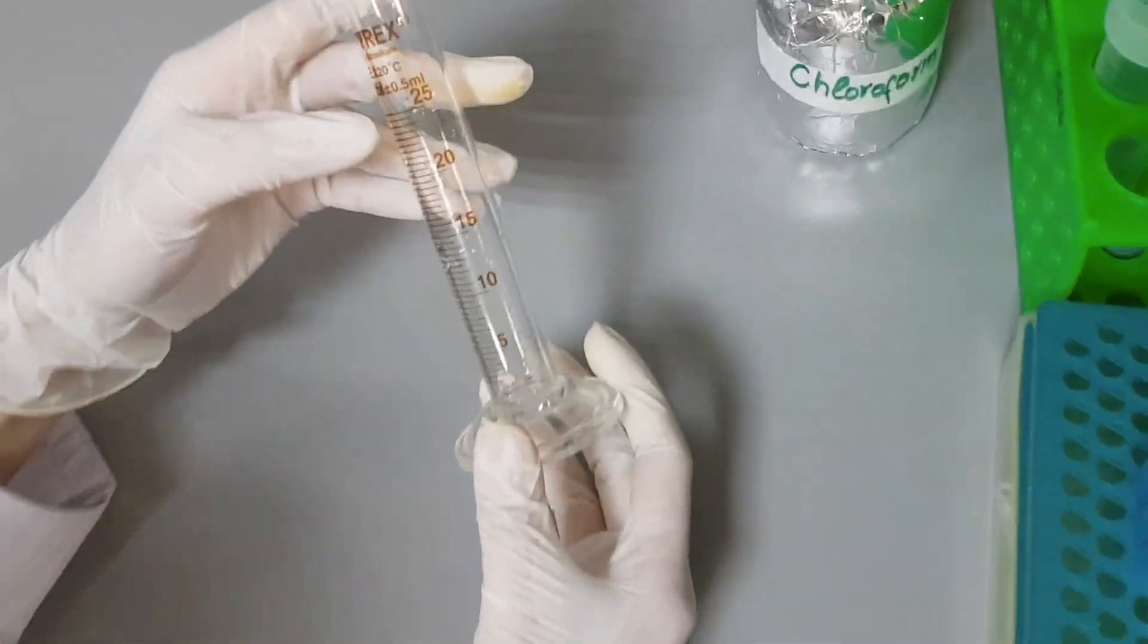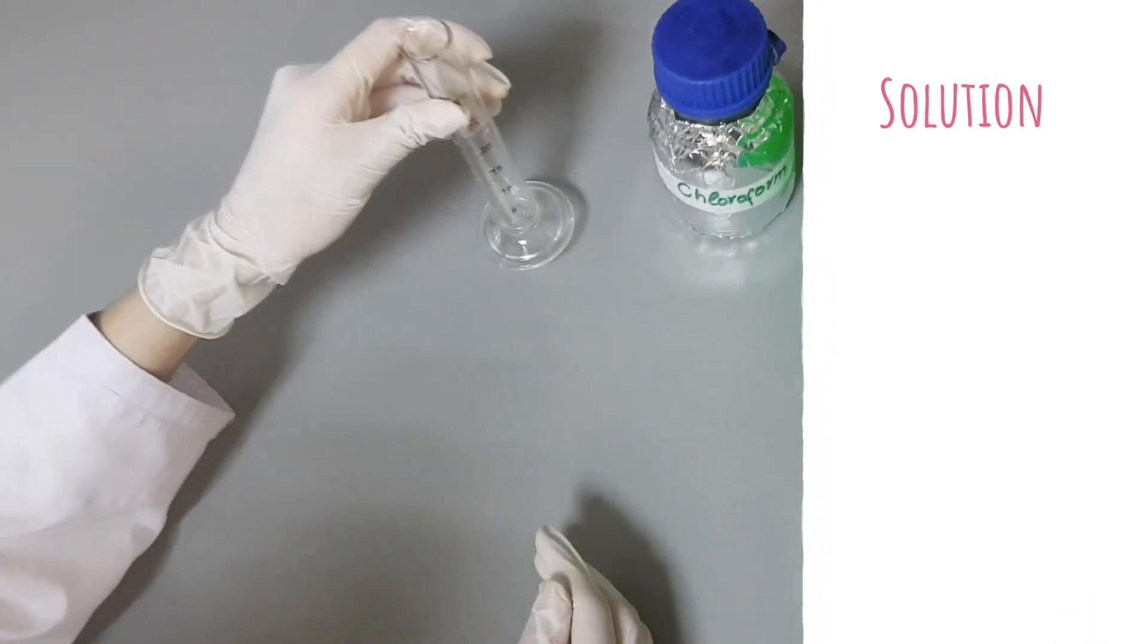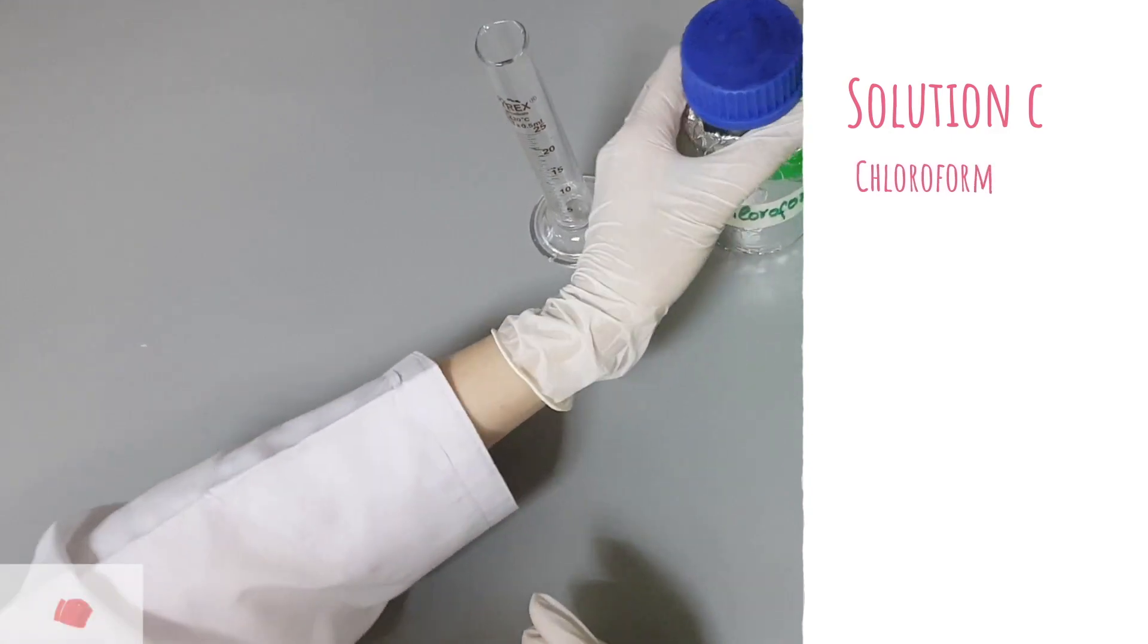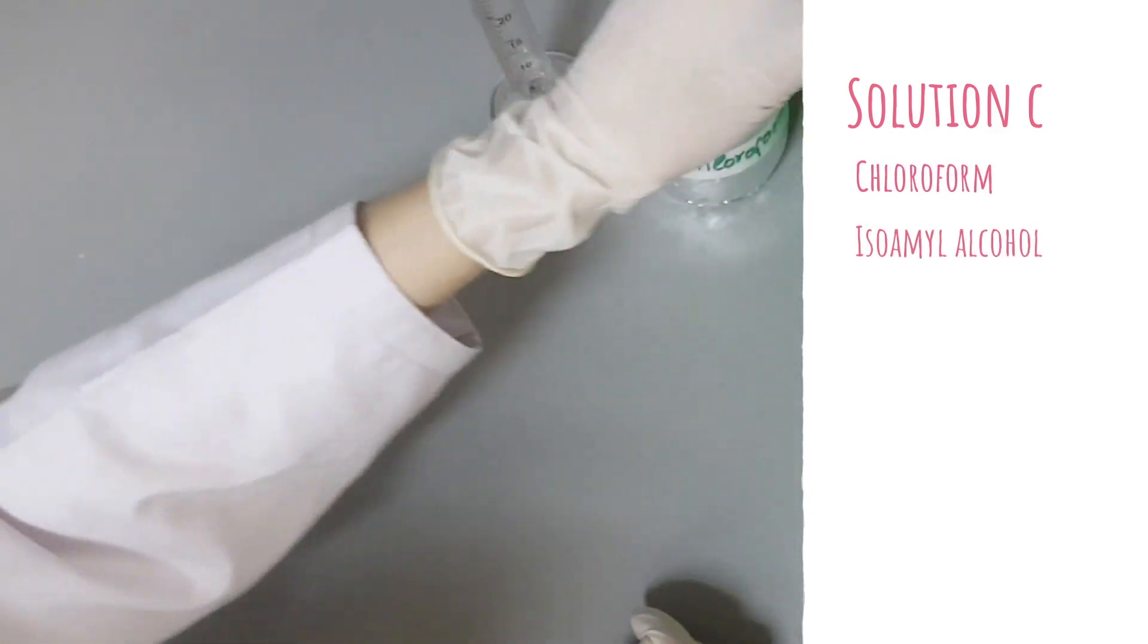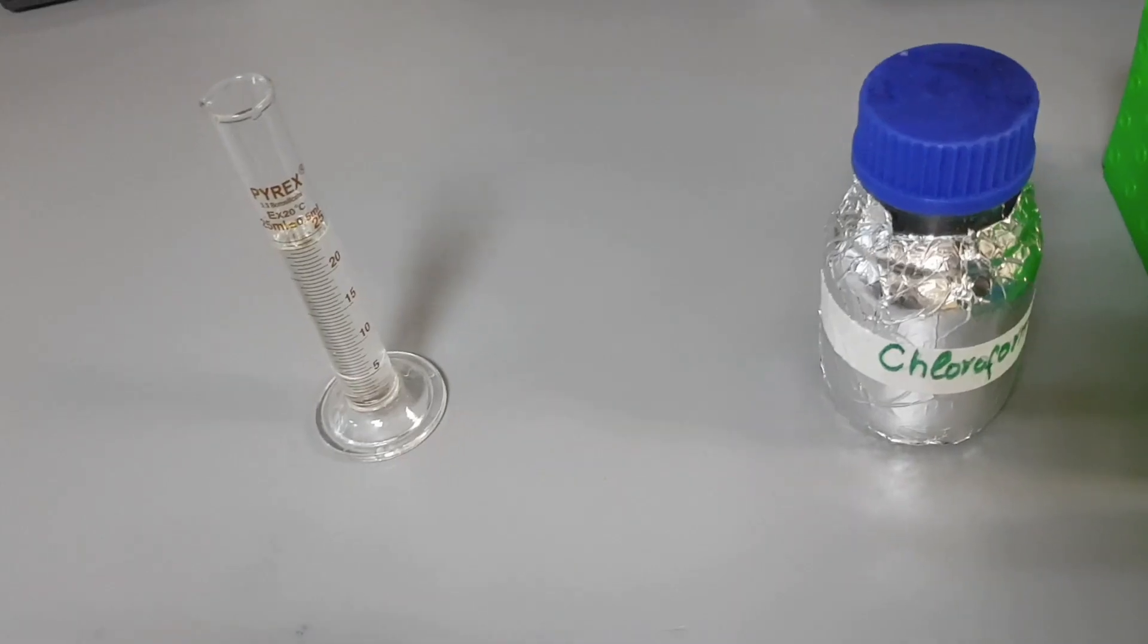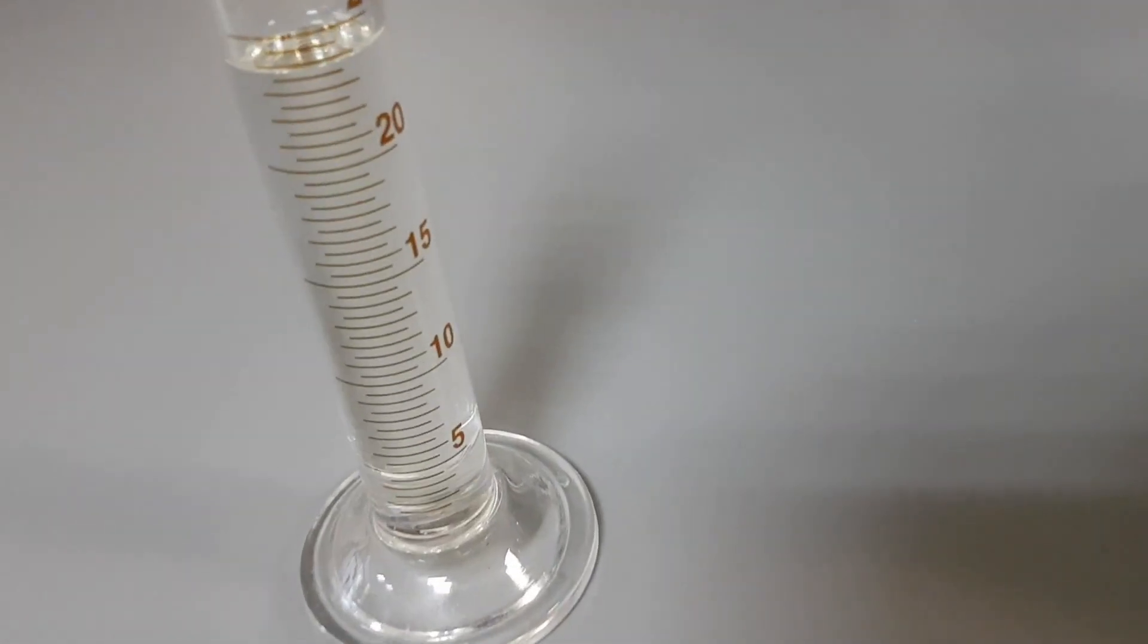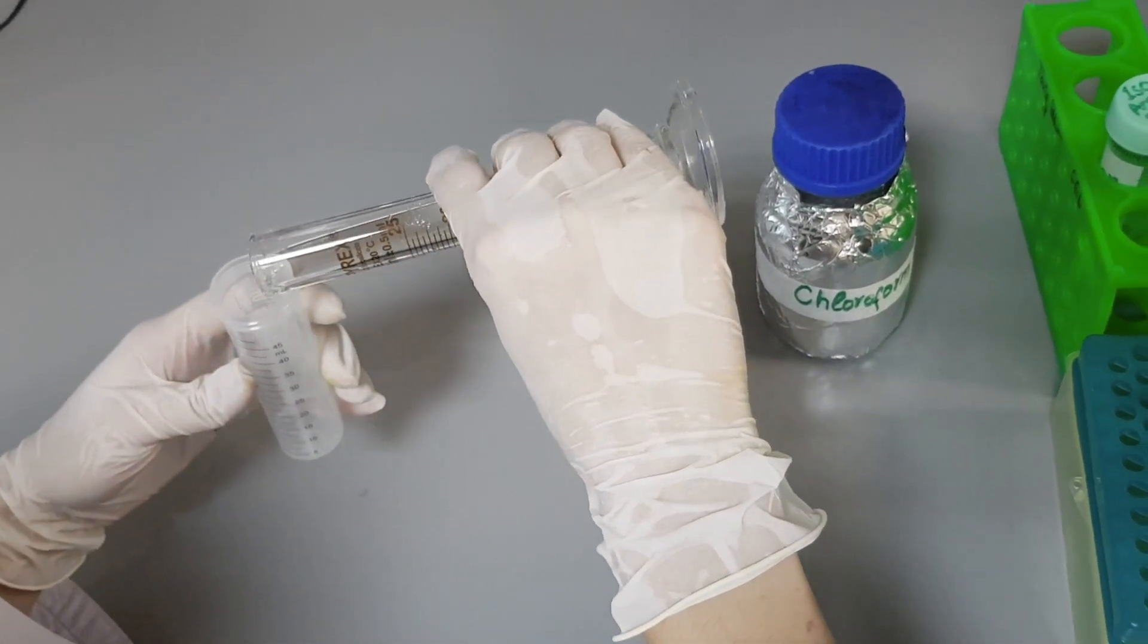Now we will discuss the preparation of solution C. The reagents we require to prepare solution C are chloroform and isoamyl alcohol. For preparing 25 ml of solution C, pour 24 ml chloroform in a measuring cylinder and then transfer it to a 50 ml falcon tube.